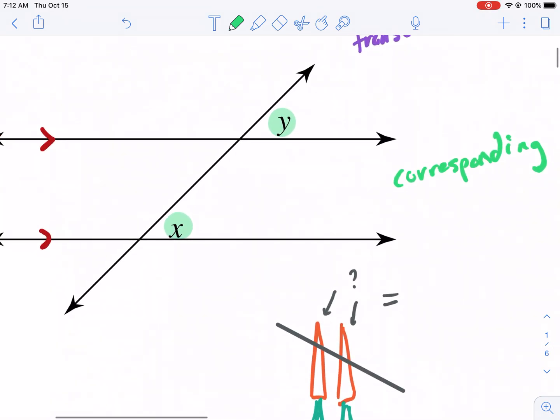So all these angles will relate to each other in some capacity. Now, I'm just going to go through and get a lot of these done. So these ones right here are corresponding angles. The reason why these are corresponding is because they're in the same location of the intersection.